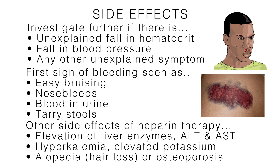Other side effects of heparin therapy include elevation of liver enzymes, the ALT and AST, which occurs in 80% of patients, and hyperkalemia, or elevated potassium, in 5 to 10% of patients. More rarely, alopecia, or hair loss, or osteoporosis may also be a side effect.